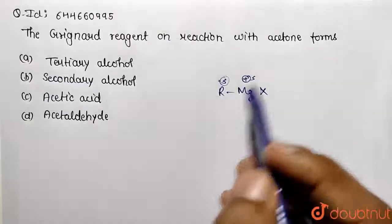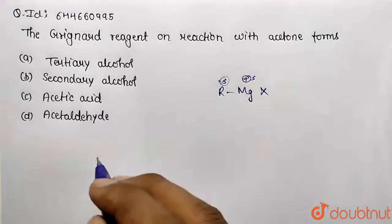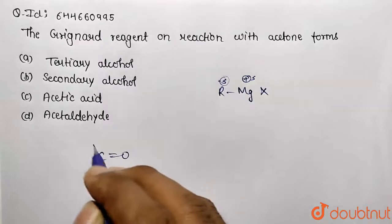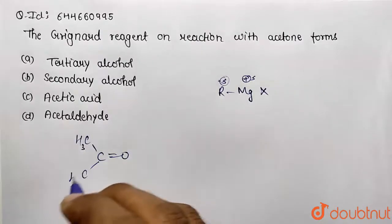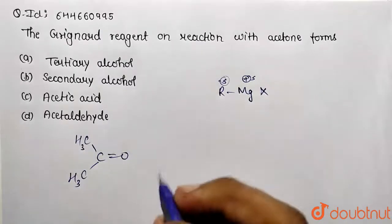Now when we are performing the reaction with acetone, what is this acetone molecule? C double bond O and carrying over two methyl groups. So this is our acetone molecule or we can call it ketonic group.